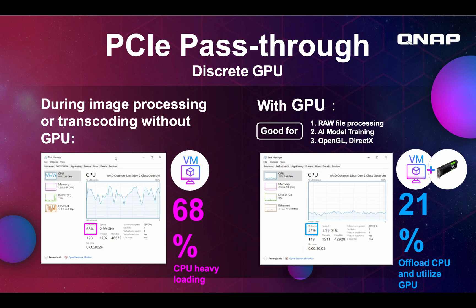An example of how PCIe Pass-Through can help lighten the load on your CPU: in this case, we were doing some transcoding in a VM and the CPU went up to 68%, because CPUs aren't that great at transcoding in general. Then we passed through a GPU and the CPU went down to 21%. So what this means is your VM should run faster, be more snappy, and more responsive, because the CPU won't be as bogged down.